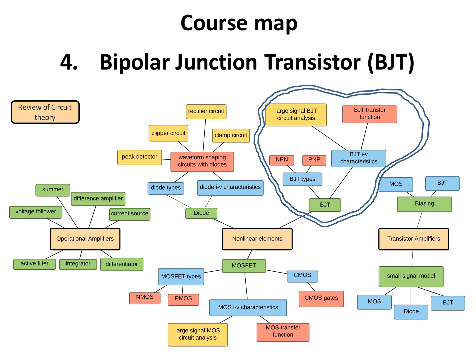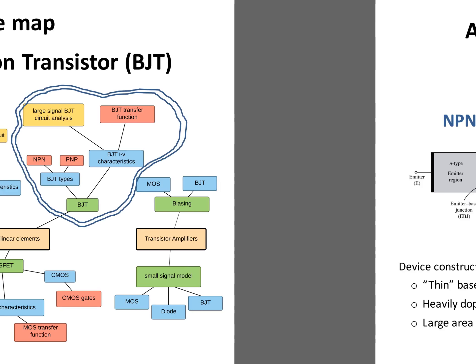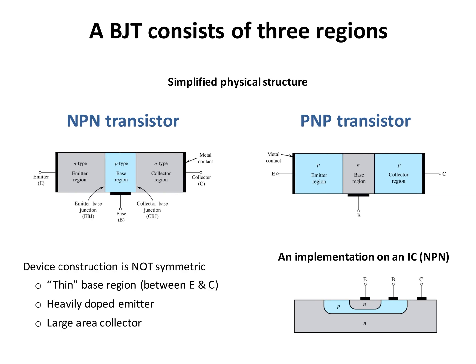Hello everyone. Today we are starting the topic of BJTs or bipolar junction transistors. BJTs are three-terminal devices that can be used in a variety of applications like signal amplification, design of digital logic circuits, and memory circuits. The basic principle is applying a voltage between two terminals to control the current flowing in the third terminal.